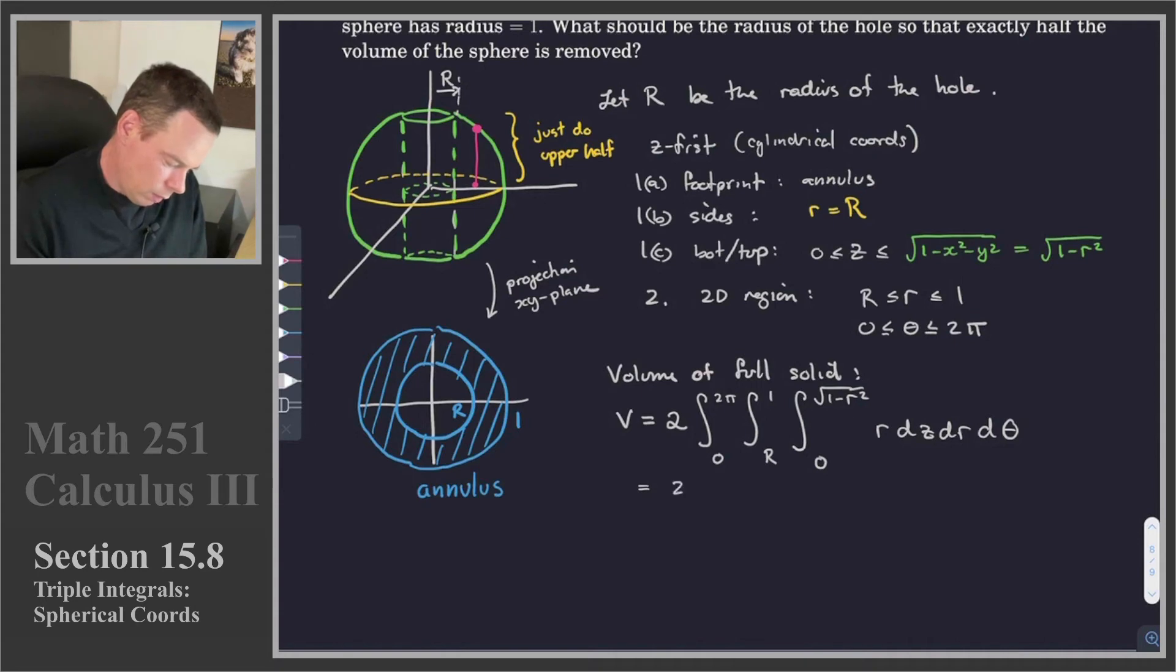So let's go ahead and compute this. We've got 2. Notice there's no theta present, so I can again integrate the theta integral by, or evaluate the theta integral by itself. That becomes just a 2 pi, so immediately I get a 4 pi out front. We get an integral from big R to 1. The integral of z, well it's just r, and I'm integrating that with respect to z, so it's constant. So that becomes rz, and then I evaluate at the limits of integration. That simplifies down to r times the square root of 1 minus r squared dr.